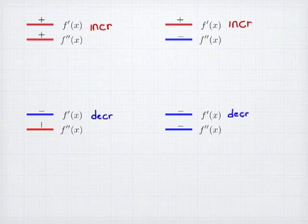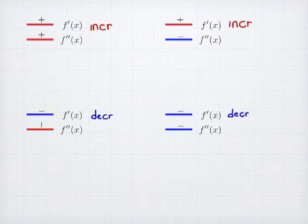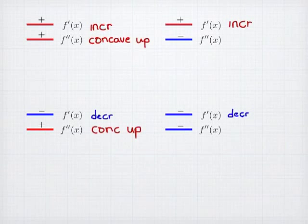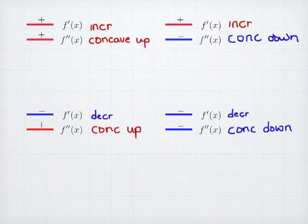The second derivative is about concavity. Where the second derivative is positive, my original function is concave up — there are two places on screen where I have a concave up shape. And where the second derivative is negative, I have a concave down shape. Let's look at each of these four cases to illustrate what these graphs would look like.